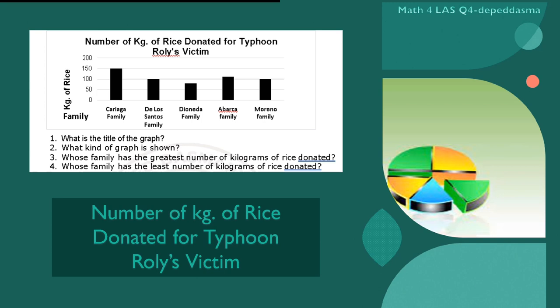Let's analyze this bar graph and answer the following questions. Number 1. What is the title of the graph? Number 2. What kind of graph is shown?